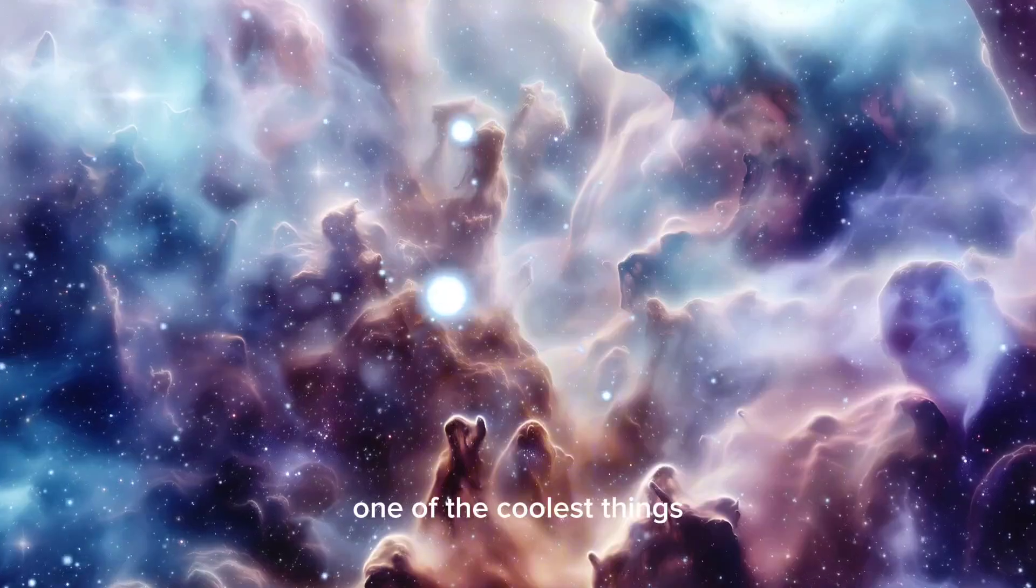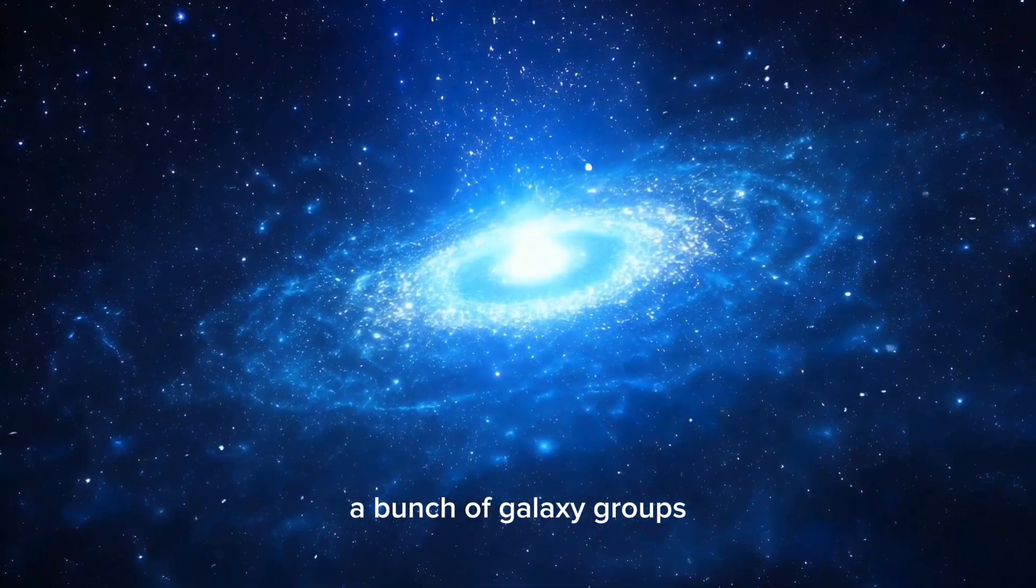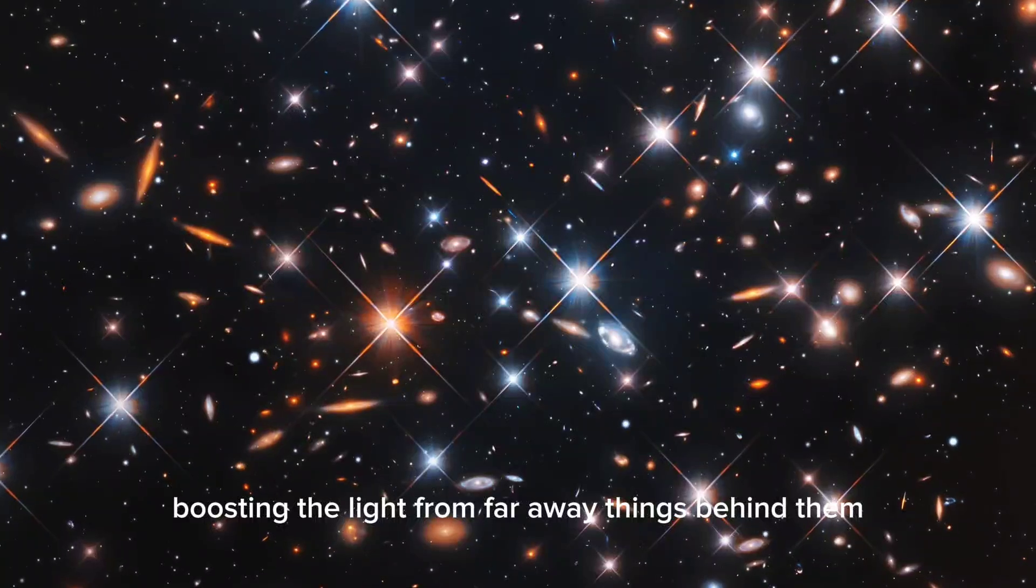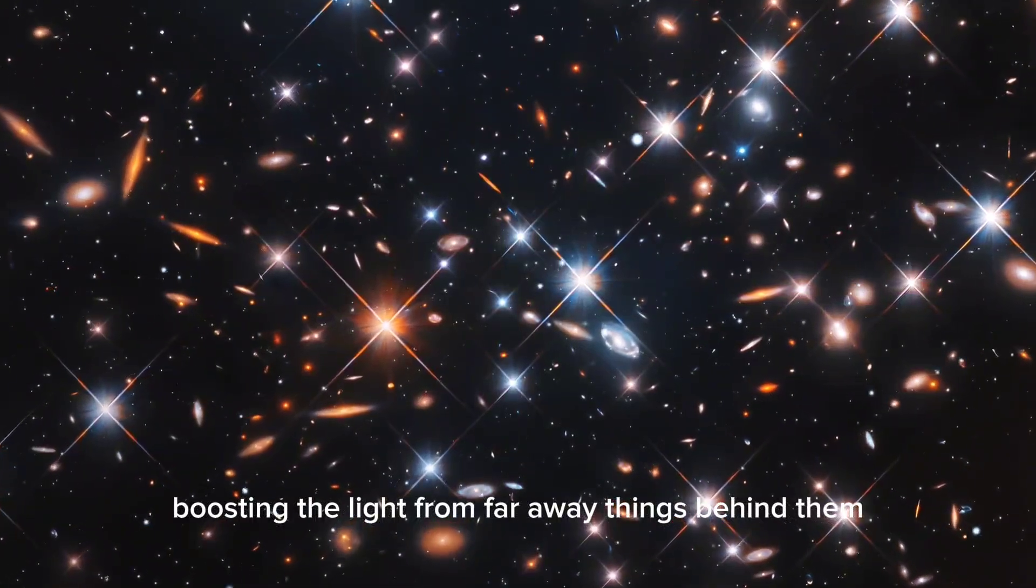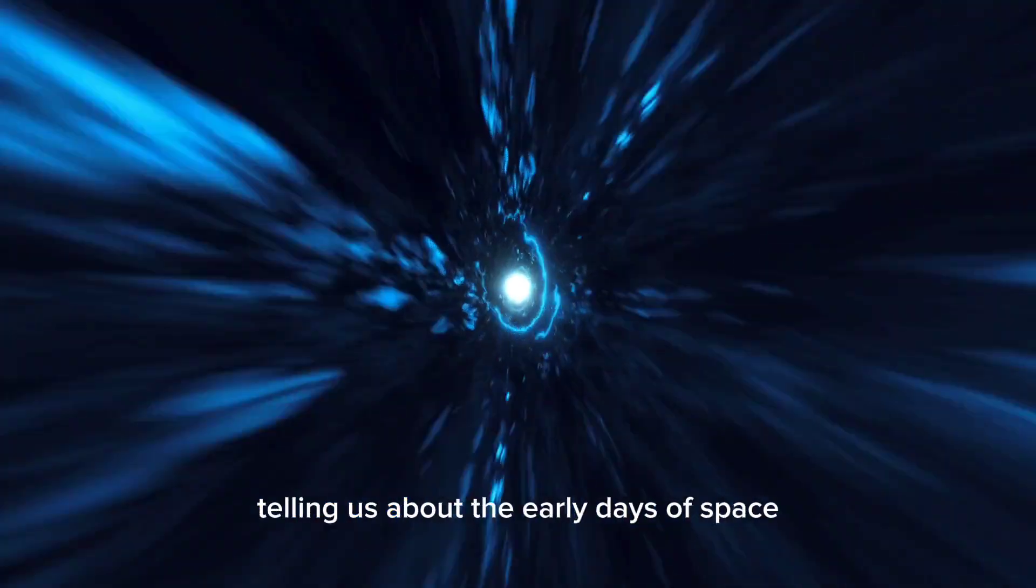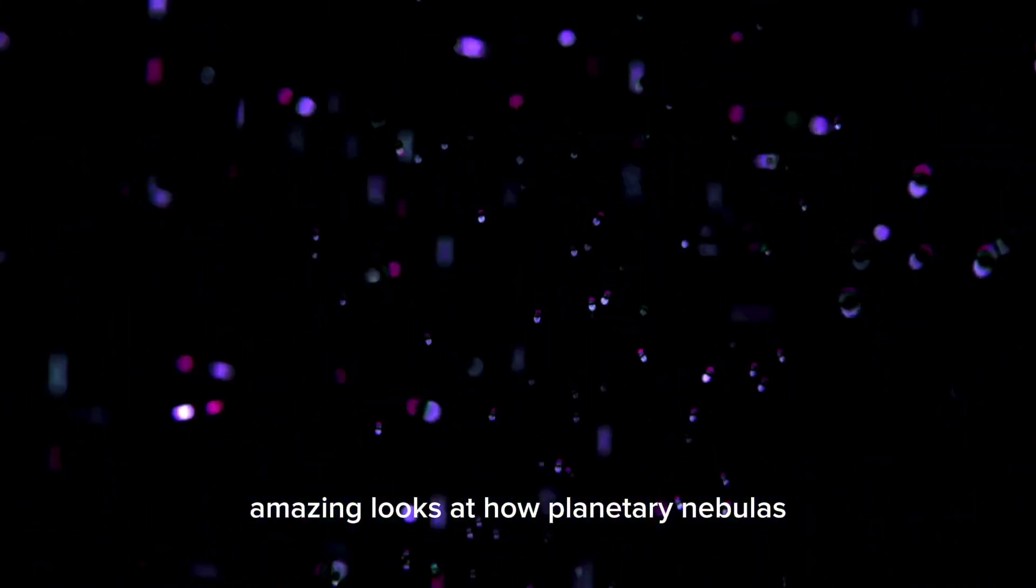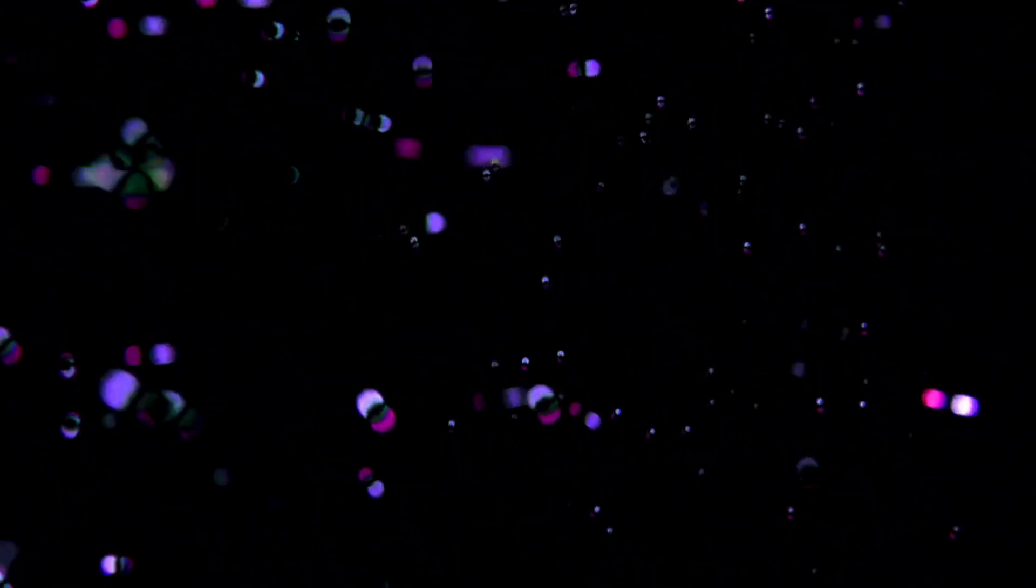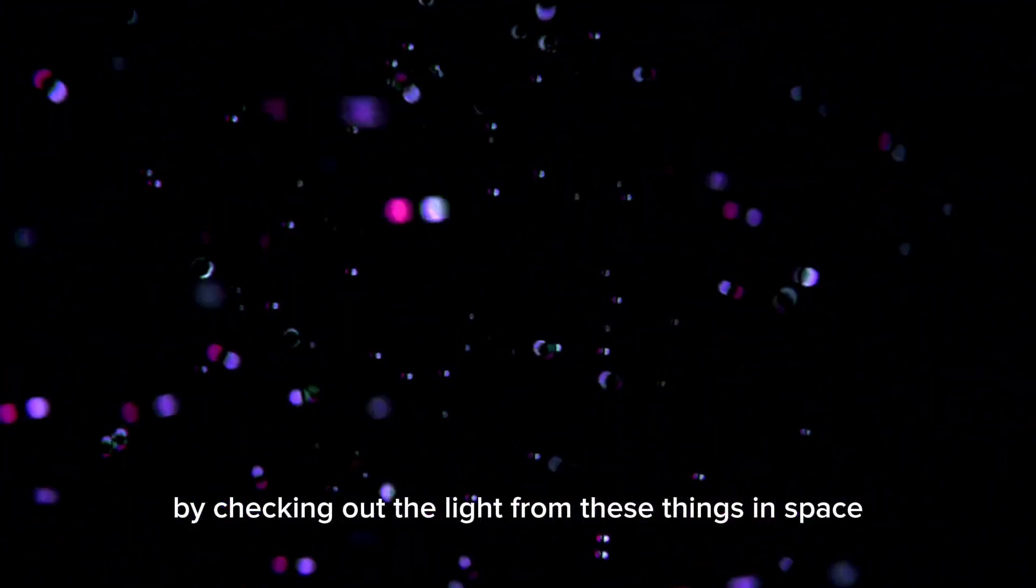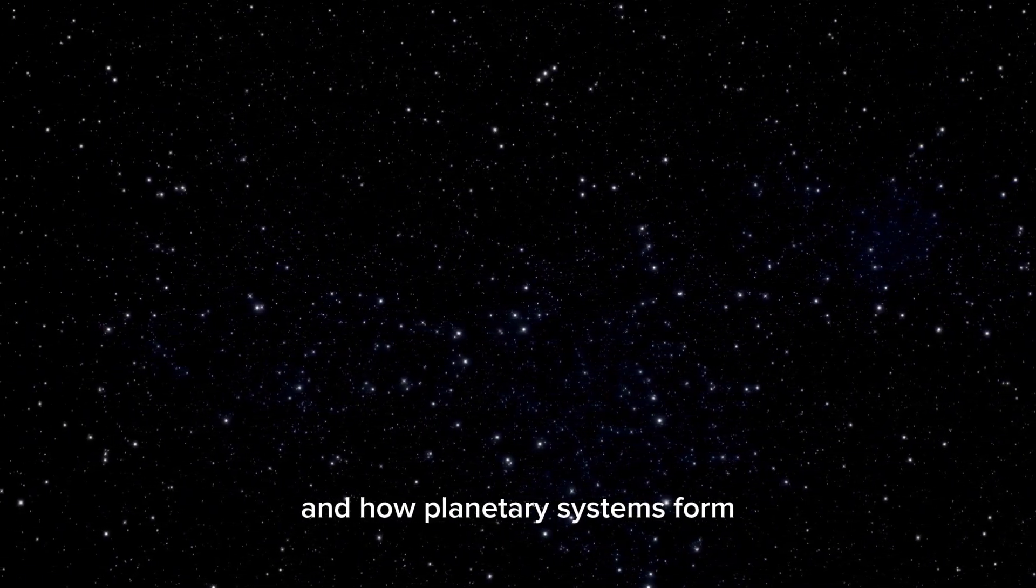One of the coolest things the James Webb Telescope found is SMACS-0723, a bunch of galaxy groups that act like magnifying glasses, boosting the light from faraway things behind them. This lets space experts see old galaxies that we couldn't see before, telling us about the early days of space. On top of that, the James Webb Telescope has given amazing looks at how planetary nebulas like the Southern Ring Nebula grow. By checking out the light from these things in space, experts have been able to figure out the complex processes that control how stars live and die, and how planetary systems form.